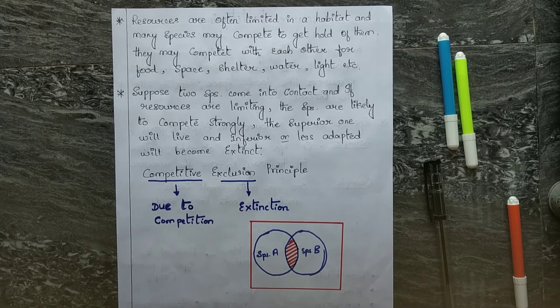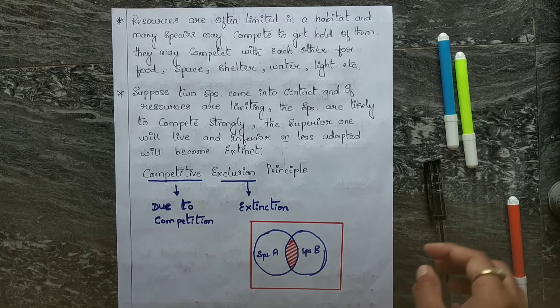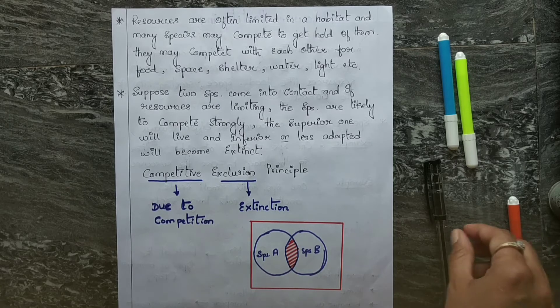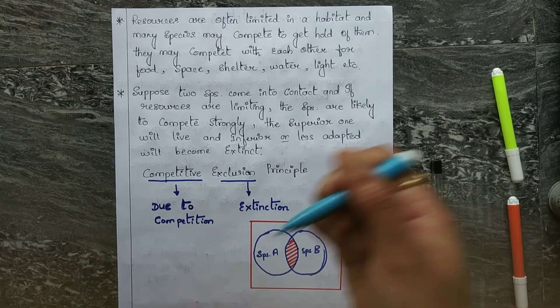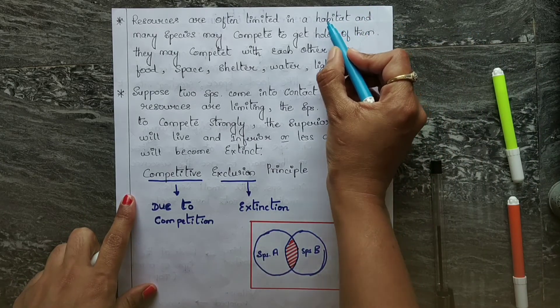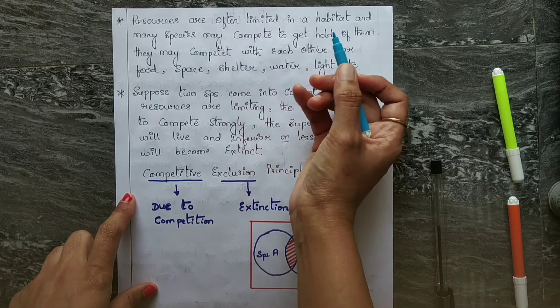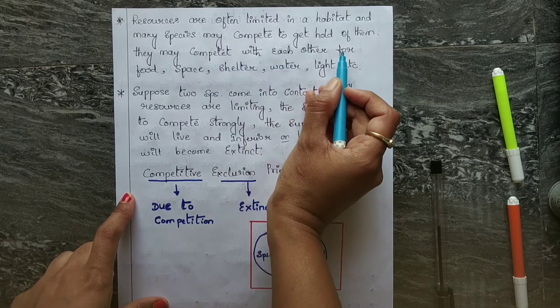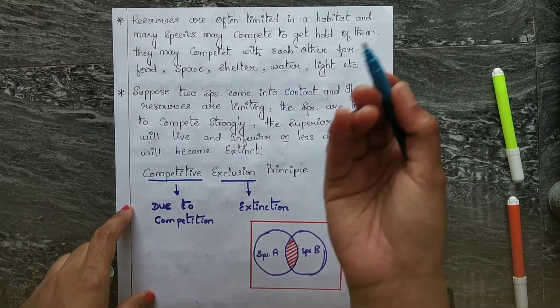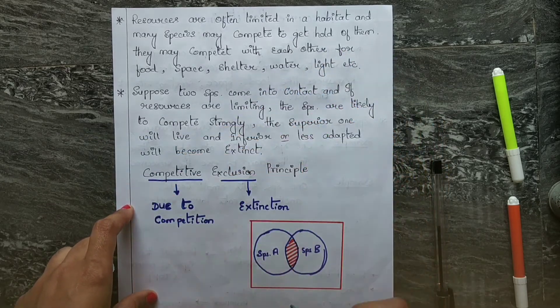We also know that resources are often limited in a habitat. Always, resources are often limited in a habitat. Many species compete to get hold of them. They may compete with each other for food, space, shelter, water, light, etc.